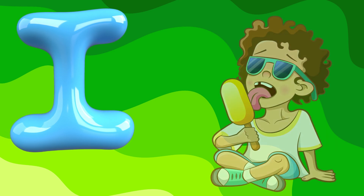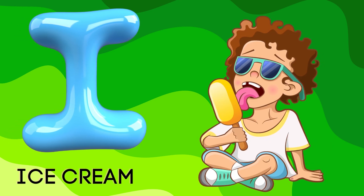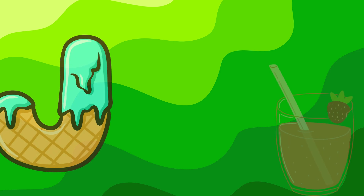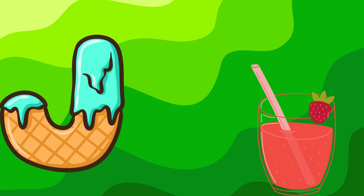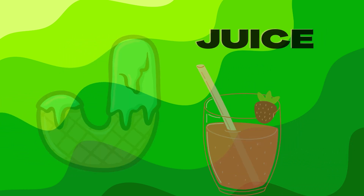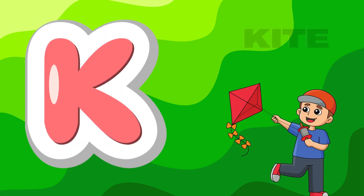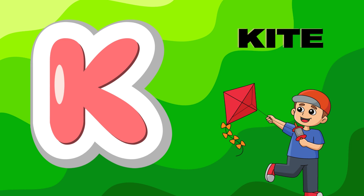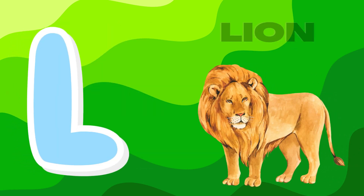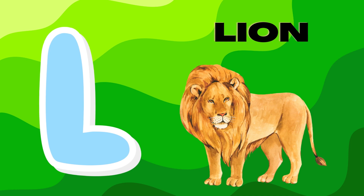I. I is for ice cream. J. J is for juice. K. K is for gut. N. N is for life.